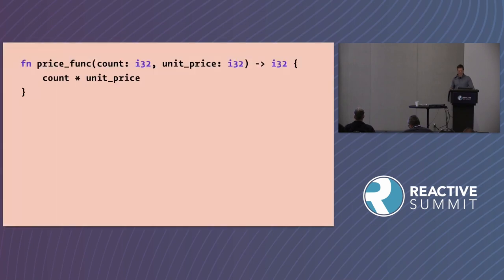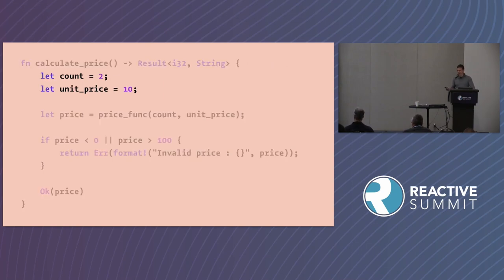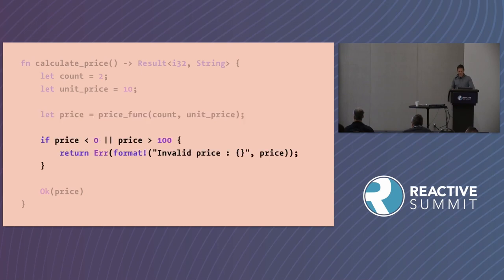Consider a point-of-sale terminal that displays the price of goods and accepts payment. I'm going to write the firmware in Rust. We have a function for determining the price that simply takes the item count and multiplies it by the unit price. The count and unit price are hard-coded in the example — they'd be external inputs in the real world. The price function returns the price. The firmware has protections against nonsensical prices, returning an error if the price is impossibly low or high — hinting at safety-critical functions embedded in firmware that won't change. And finally, we return the price to display to the customer.